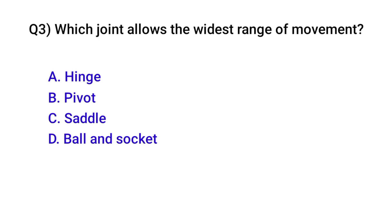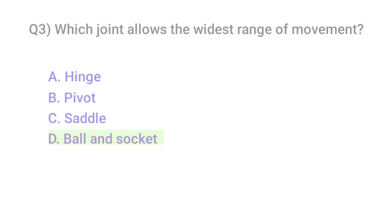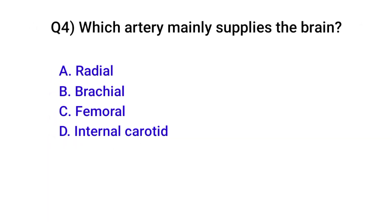Question number three: Which joint allows the widest range of movement? Correct option is D: Ball and socket. Question number four: Which artery mainly supplies the brain? Correct option is D: Internal carotid artery.